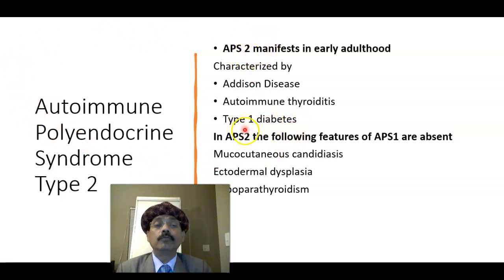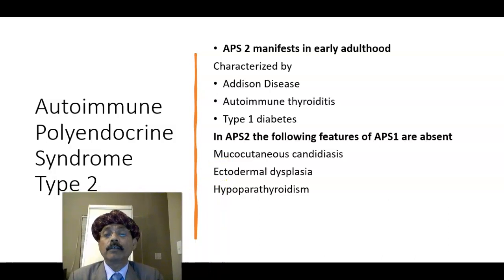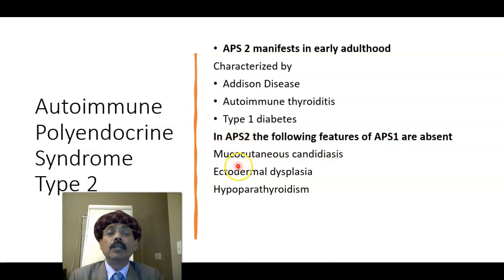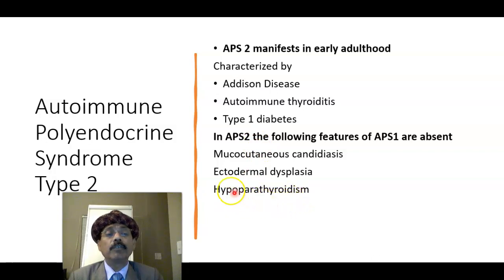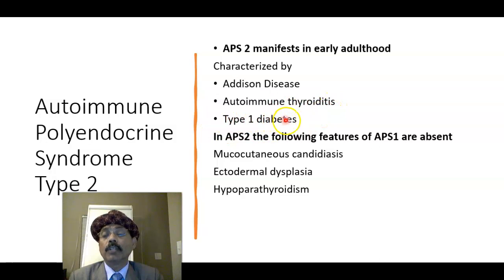How does APS2 differ from APS1? APS2 will not have mucocutaneous candidiasis — that is a part of APS1, not a component of APS2. There is no ectodermal dysplasia in APS2 and no hypoparathyroidism. These features are absent in APS2. In APS2, we have primary adrenocortical insufficiency causing Addison's disease, autoimmune thyroiditis, and type 1 diabetes.